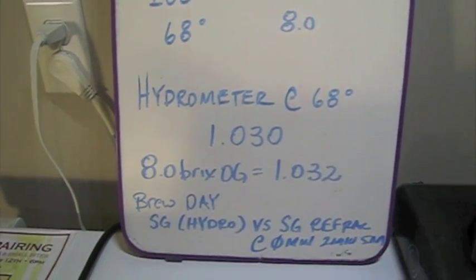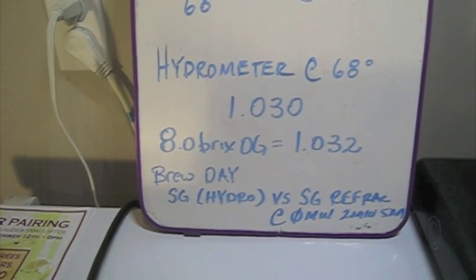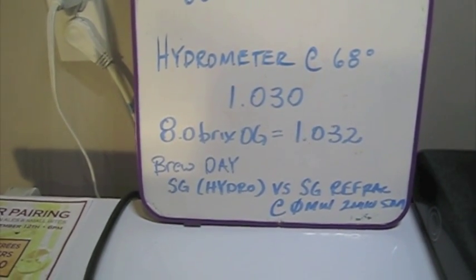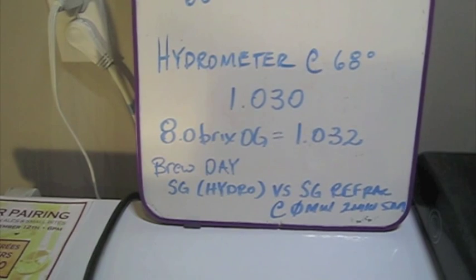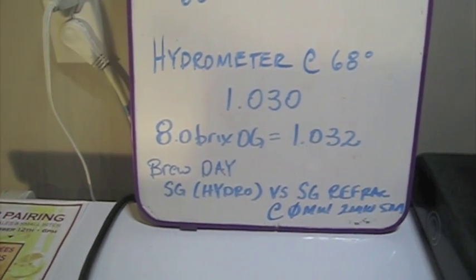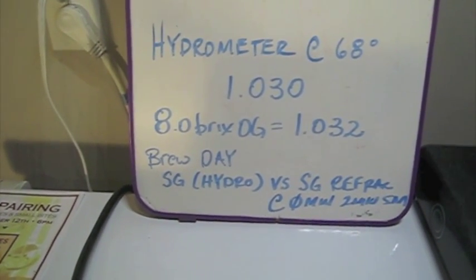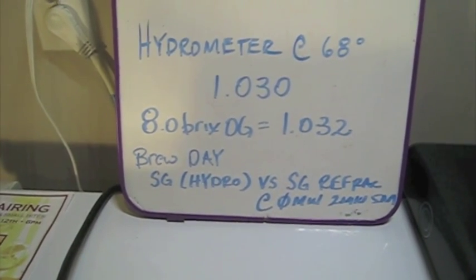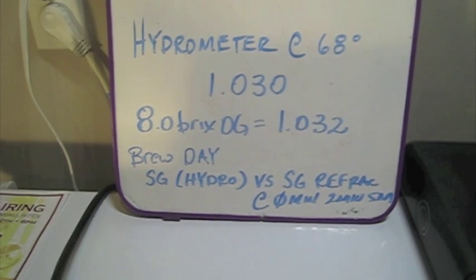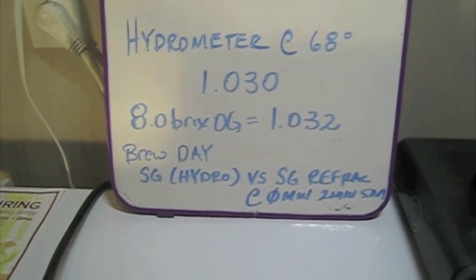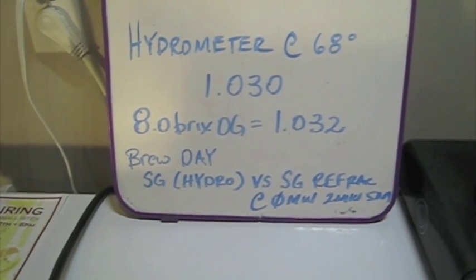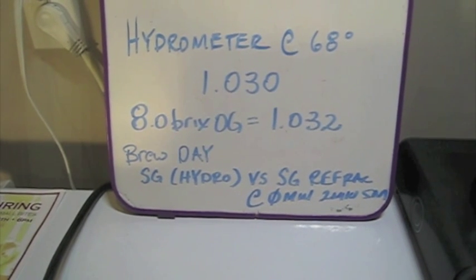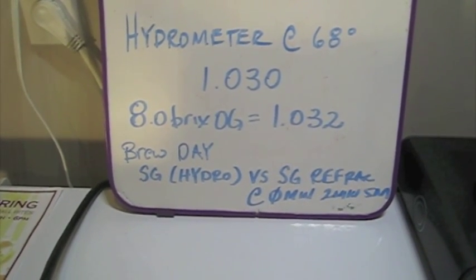Now, what I plan on doing on the next brew day is take this a step further, because that's when it really counts. That's when we'll have a more complex wort using an actual recipe versus a single DME. Also, I'll be taking the sample right after the sparge. And as soon as the boil begins, I'll make it a point of taking a sample size large enough to use the hydrometer. I'll let it cool down enough to get an accurate reading.